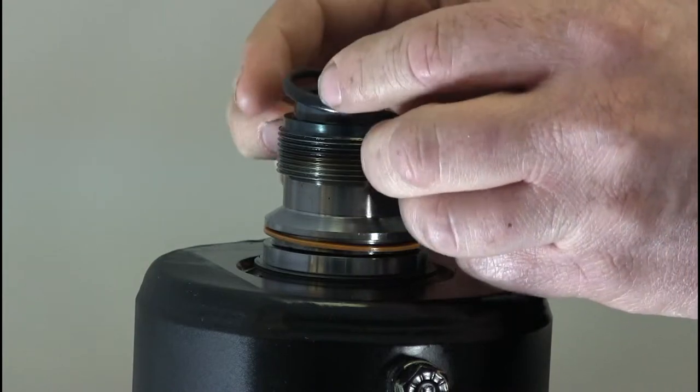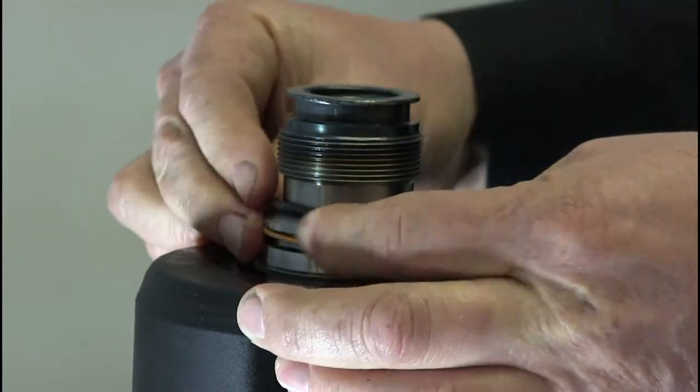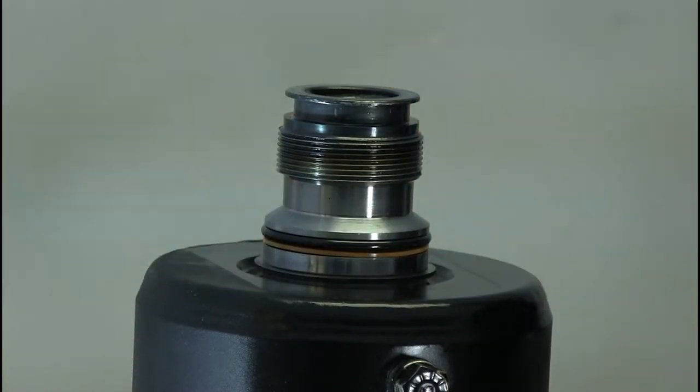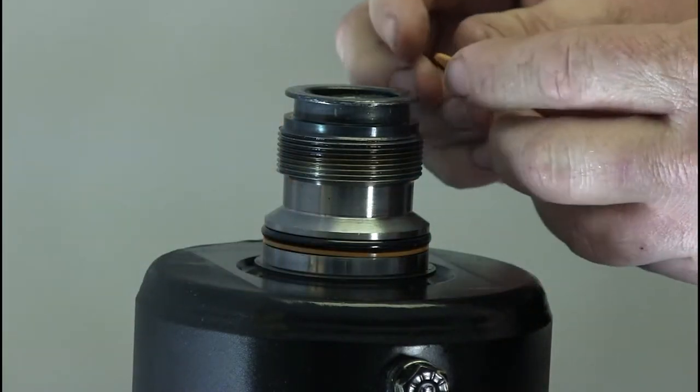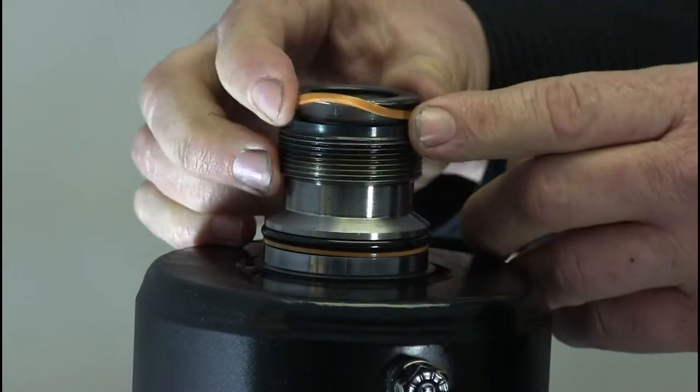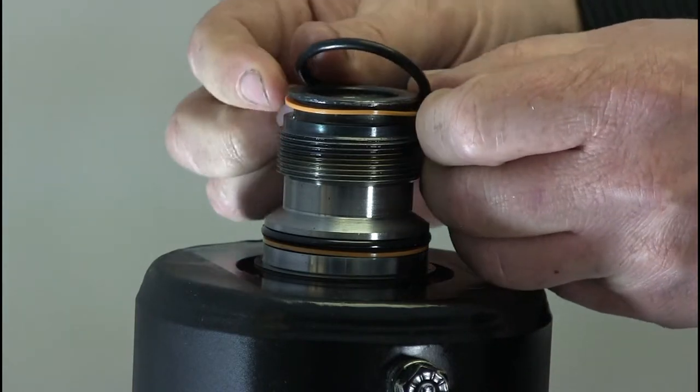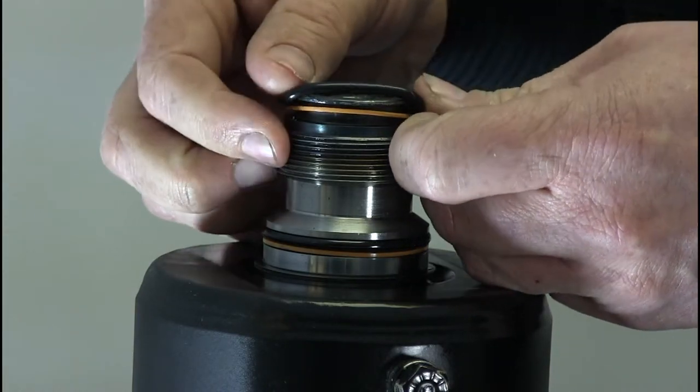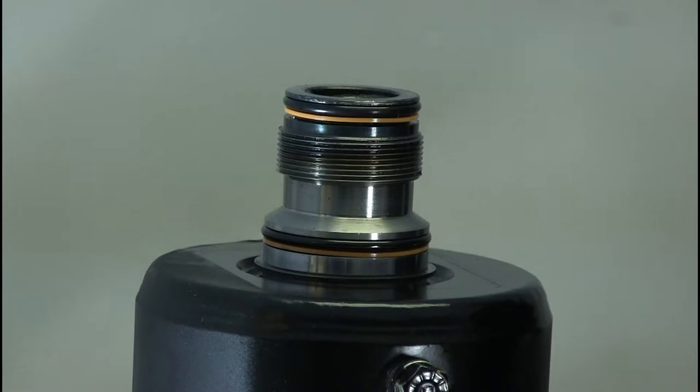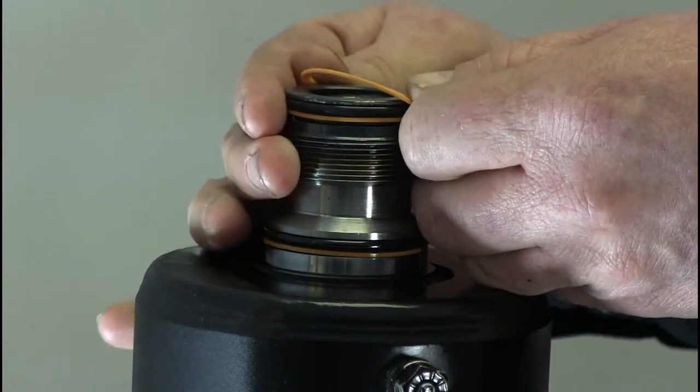Then the large black O-ring goes on top of it. Then the smaller orange O-ring. Then the smaller black O-ring goes on top of that. And then the last orange O-ring goes on top of the black O-ring.